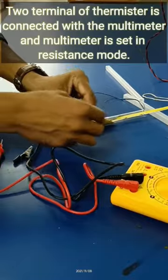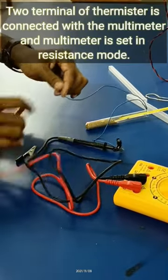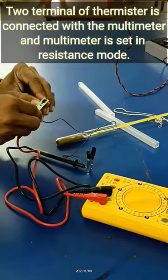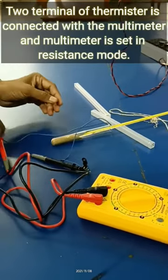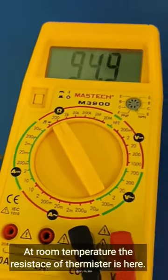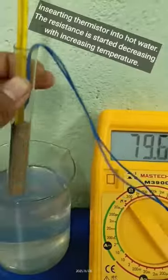Procedure: Insert the thermistor and thermometer in the test tube and partly fill it with sand. Connect the two terminals of the multimeter with the thermistor. Keep the multimeter as ohmmeter. Insert the test tube in a hot water bath using the beaker.